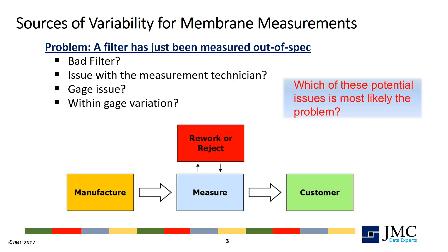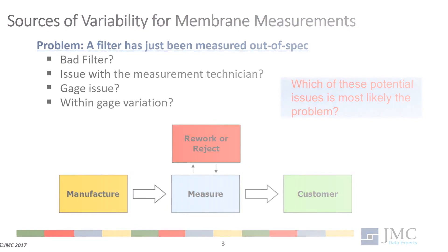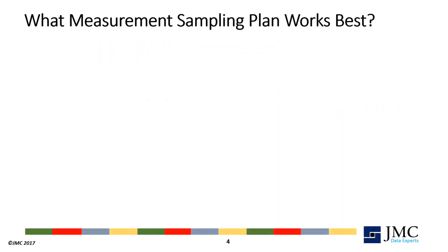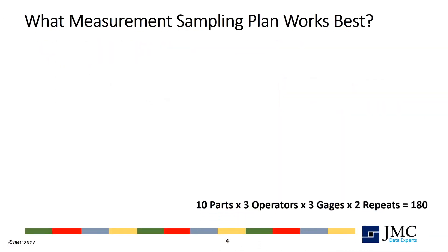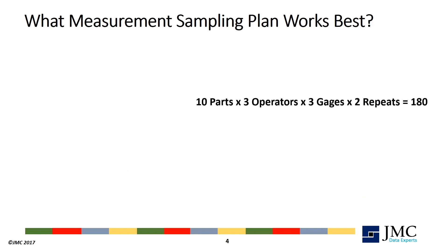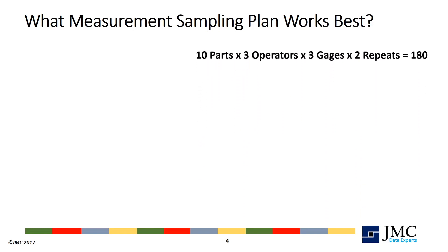Their first step was to determine what sampling plan would do the best job of answering this question. By intuition, a standard 10 parts by 3 operators by 2 repeat study, replicated 3 times for 3 gauges, should work.